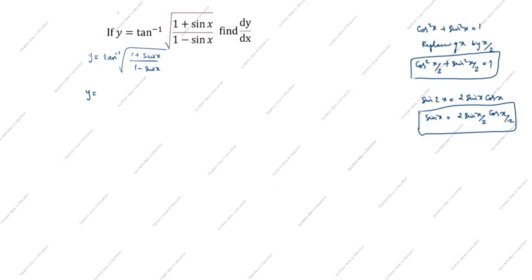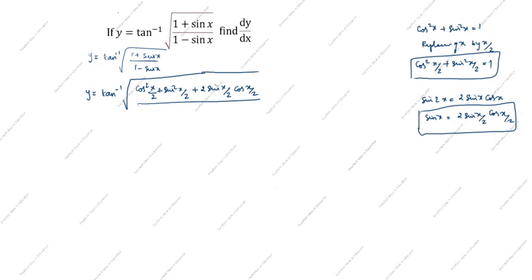Next step: y is equal to tan inverse of root of — in the numerator: 1 is cos squared(x/2) plus sine squared(x/2) plus 2 sine(x/2) cos(x/2), divided by — in the denominator: cos squared(x/2) plus sine squared(x/2) minus 2 sine(x/2) cos(x/2).